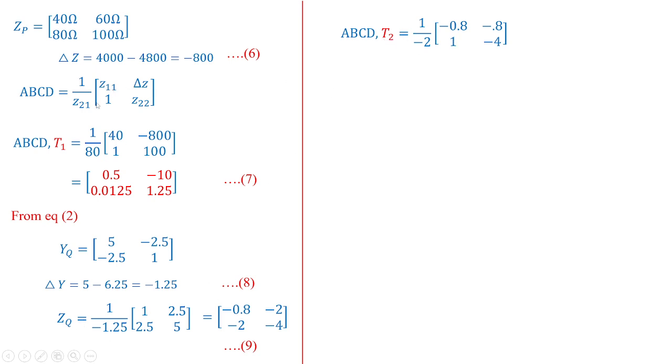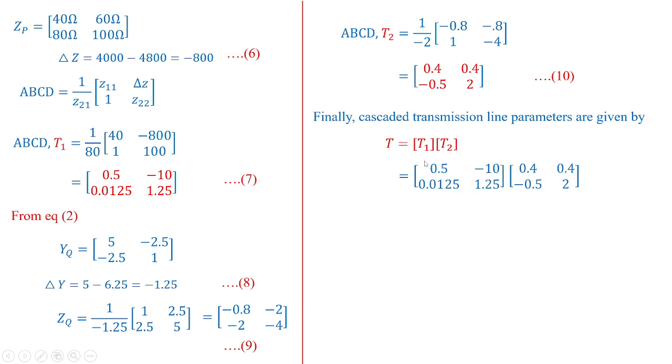And finally I'm taking the transmission parameters 2 that is again obtaining ABCD parameters from Z parameters. So again taking this type of formula which is shown over here and getting the values of T2 in this fashion. You can see we have obtained the value of T2 transmission line parameters as 0.4, 4 minus 0.5 and 2. After taking this equation as 10 we are going to cascade transmission line parameters which is given by this formula T equal to T1 T2. So they take these two matrices that is matrix which is present in 7 multiplied with matrix 10.